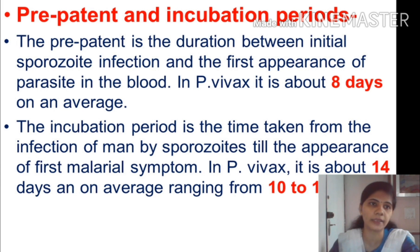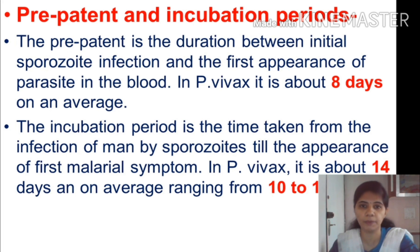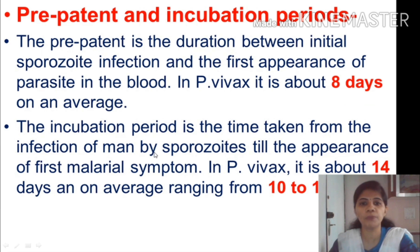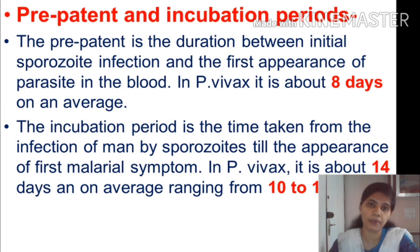Two important terms to learn here are the pre-patent period and the incubation period. The pre-patent period is the duration between the initial sporozoite infection and the first appearance of the parasite in the blood. In Plasmodium vivax it is about 8 days on average. The incubation period is the time taken from infection of man by the sporozoite until the appearance of the first malarial symptom. In Plasmodium vivax it is about 14 days on average, ranging from 10 to 17 days.